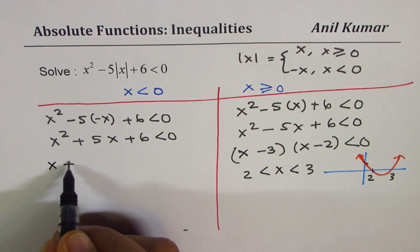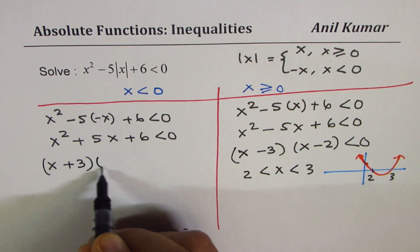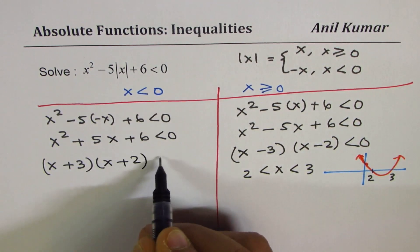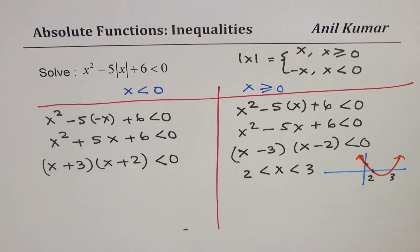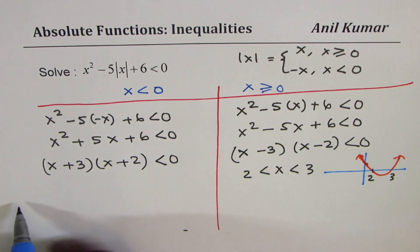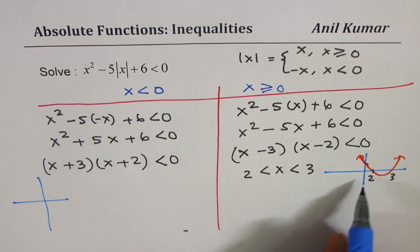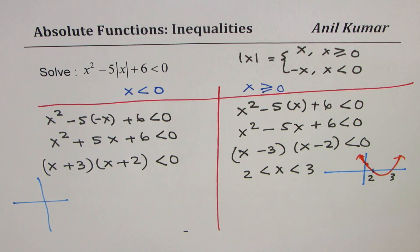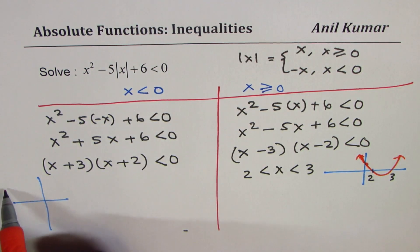In this case, we could write this as x plus 3 times x plus 2 is less than zero. This graph is going to be very symmetric to that. So it is going to be minus 2 minus 3.